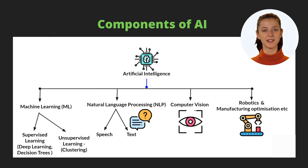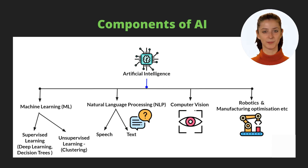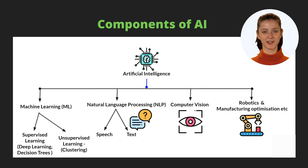One important thing to note is that there is significant overlap among these AI techniques. For example, machine learning algorithms like deep learning are heavily used in natural language processing and computer vision to solve problems with text or images. We will get a deeper understanding of each of these terms in the coming lectures.